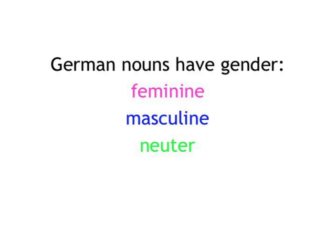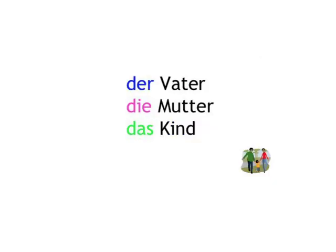So instead of the simple English 'the', we have either 'der' for masculine nouns, as in 'der Vater', 'die' for feminine nouns, as in 'die Mutter', or 'das' for neuter nouns, as in 'das Kind'. Der Vater, die Mutter, das Kind.